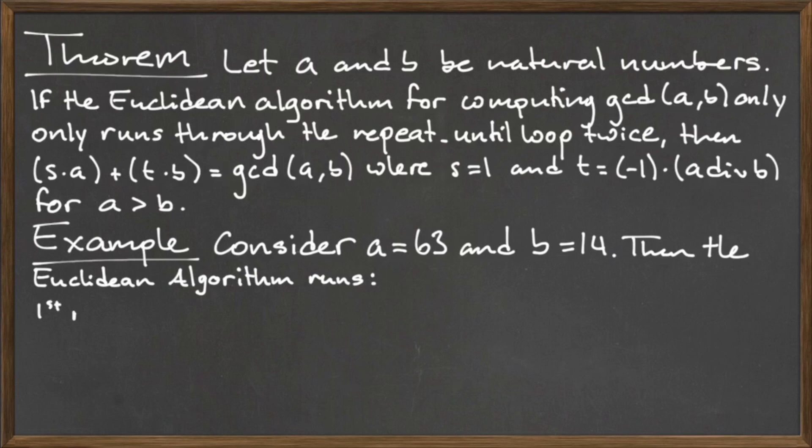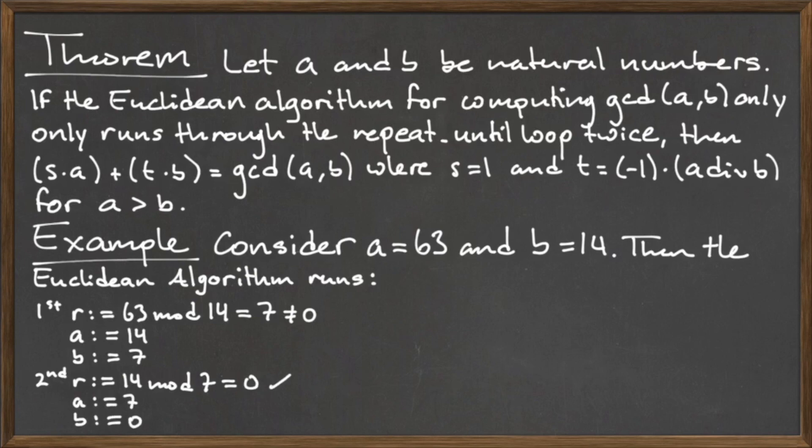The first iteration of the Euclidean algorithm loop produces the values r equals 7, a equals 14, and b equals 7, and the second run of the loop produces the values r equals 0, a equals 7, and b equals 0.